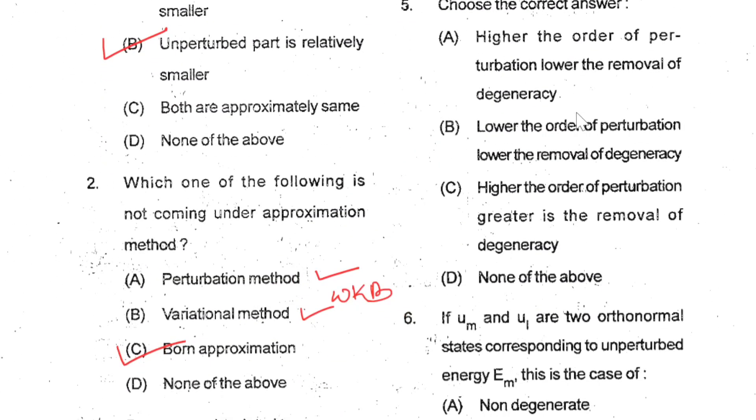Question number five: Choose the correct answer. Higher the order of perturbation, greater is the removal of degeneracy. So C is your correct option.